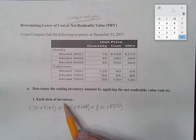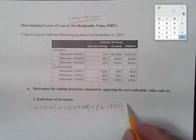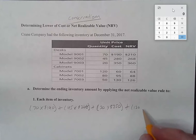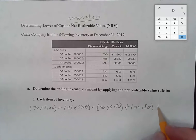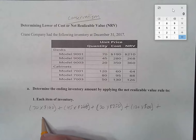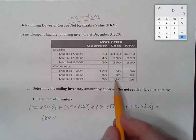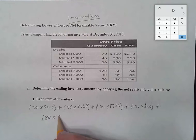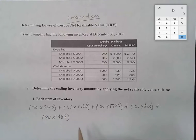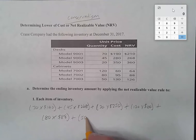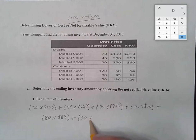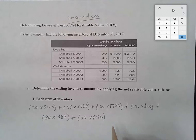Because we're assessing each item of inventory, we move straight into cabinets. For model 7001, we have 120 units and the historical cost is the lowest, so we use that. For the next model we have 80 units — the net realizable value of $88 is the lower figure, so we use that. Finally, model 7003 has 50 units in stock and the net realizable value is $126.